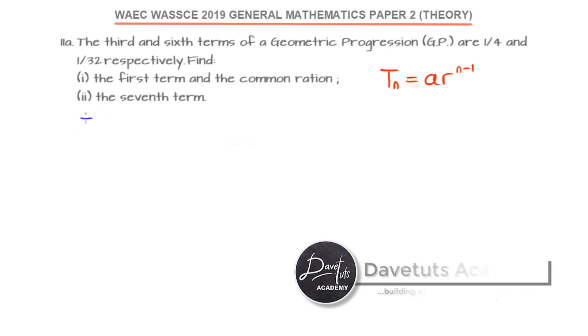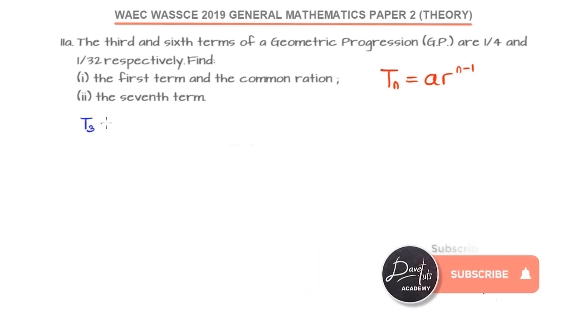For this particular question, we are told that the third term, that would be T_3, which is A times R raised to n minus 1, but instead of n we say it is 3. So 3 minus 1 is 2. We are told that the third term is 1/4. That is the first statement in the question.